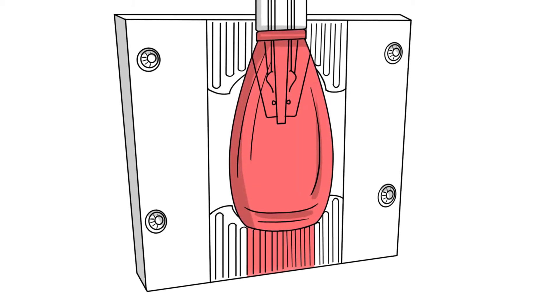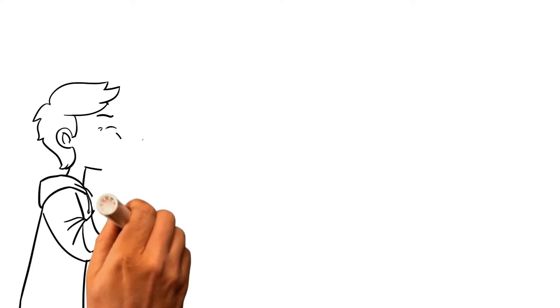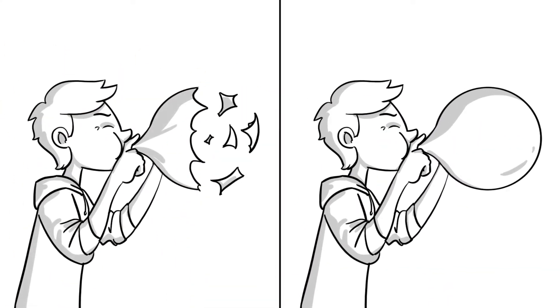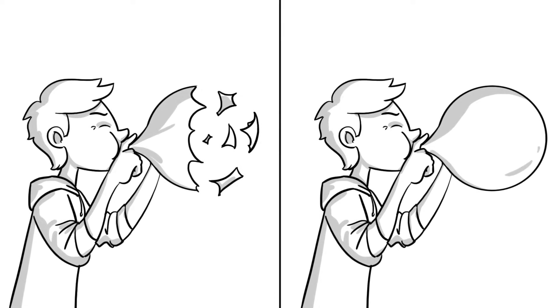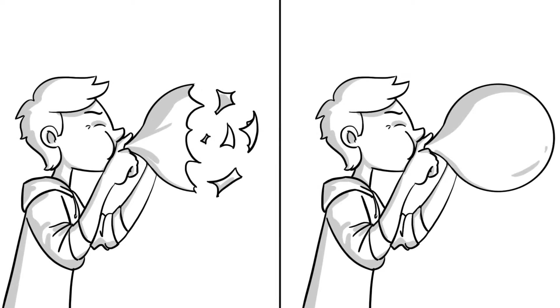Air is then blown into the parison, causing it to take the shape of the mold cavity. It's a bit like blowing up a balloon. If you blow too much air, it pops, which is why ensuring the parison is consistent and the correct amount of air is blown into the parison is critical to the quality of the product.